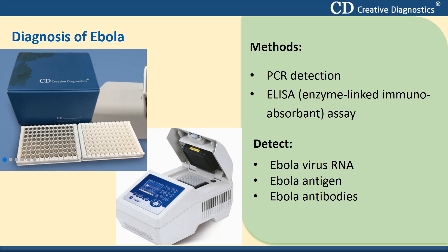Ebola virus is difficult to diagnose because early signs and symptoms resemble those of other diseases, such as typhoid and malaria. If doctors suspect you have Ebola, they use blood tests to quickly identify the virus, including ELISA and PCR to detect Ebola virus RNA, Ebola antigens, and Ebola antibodies.